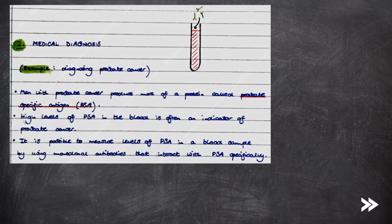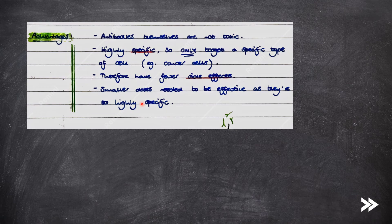Monoclonal antibodies can also be used for medical diagnosis, for example, in the diagnosis of prostate cancer. Men with prostate cancer produce more of a protein called prostate-specific antigen, PSA. High levels of PSA in the blood is often an indicator of prostate cancer. It is possible to measure the levels of PSA in a blood sample by using monoclonal antibodies that interact with PSA specifically.